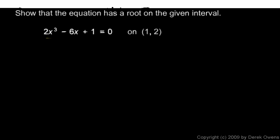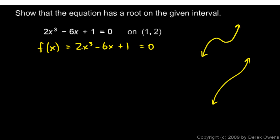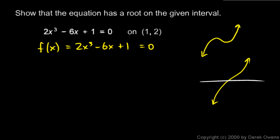This is a cubic equation, and it's helpful to think of this as a cubic function: f of x equals 2x cubed minus 6x plus 1. A cubic function might look like this, or it might just have a little wobble in the middle. I don't know exactly what this function looks like, but I know it's a cubic, and I know it has to cross the axis. We're trying to show that it crosses the axis somewhere between an x value of 1 and an x value of 2. I'm going to find f of 1 and f of 2.